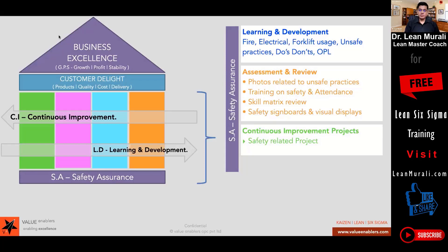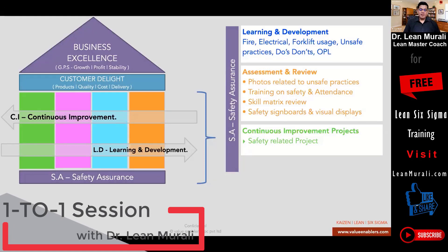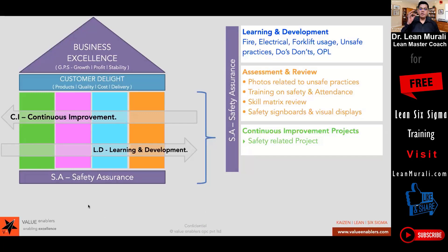You need to pick up what fits your organization — it is not a prescription for every company. When we start an excellence journey, we say start with a safety gemba walk. Form a team of four or five people, walk across your organization, and identify unsafe practices. What is not identified cannot be improved. The power of teamwork in this is phenomenal.